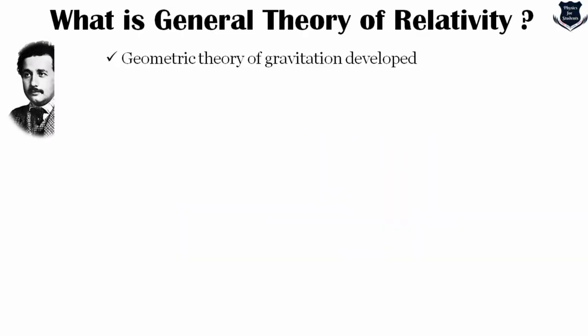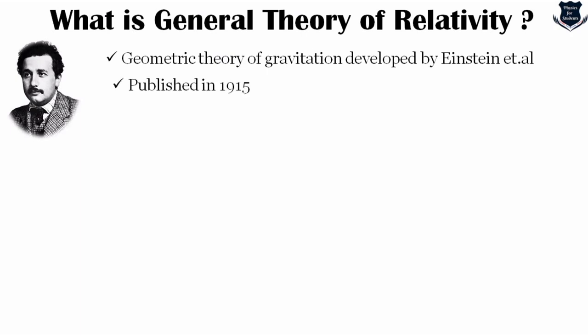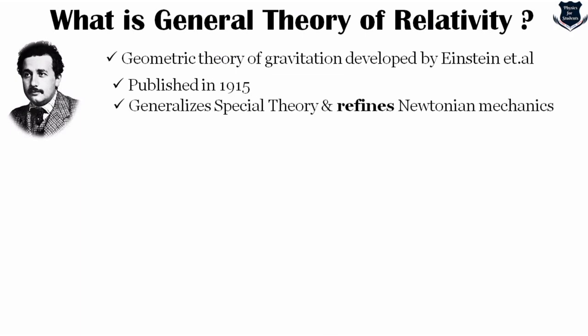General relativity, also known as the general theory of relativity, is the geometric theory of gravitation published around 1915 by Albert Einstein and is the current description of gravitation in modern physics. General relativity generalizes special relativity and refines Newton's law of universal gravitation, providing a unified description of gravity as a geometric property of space and time — or four-dimensional spacetime. The curvature of spacetime is directly related to the energy and momentum of whatever matter and radiation is present.